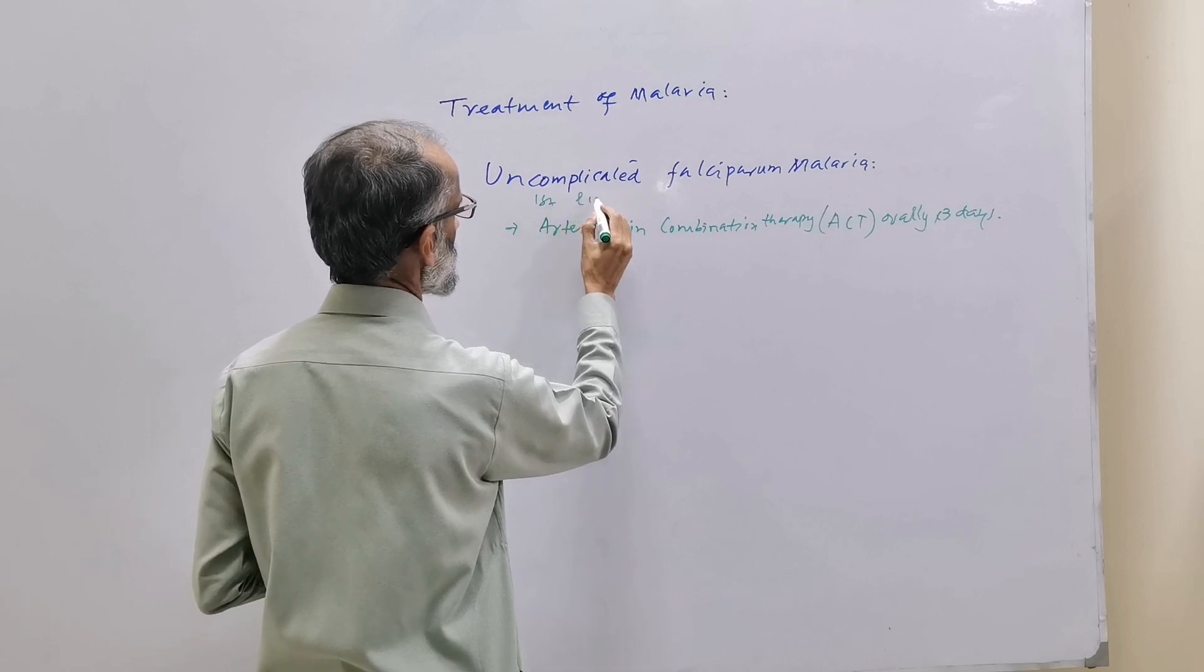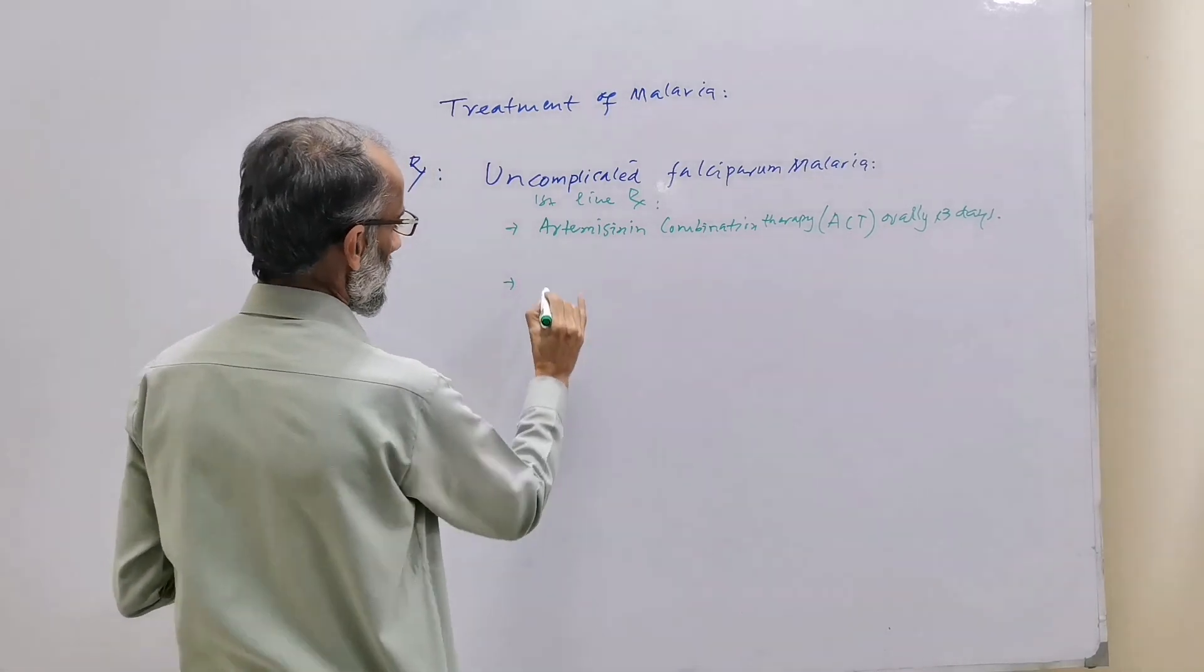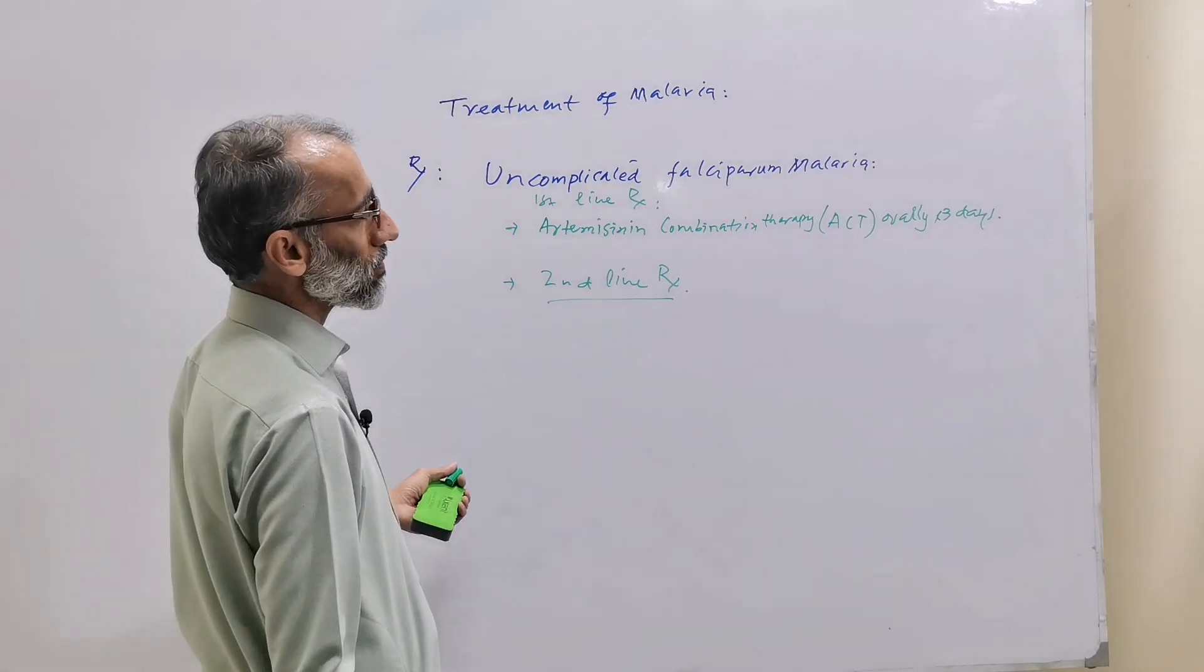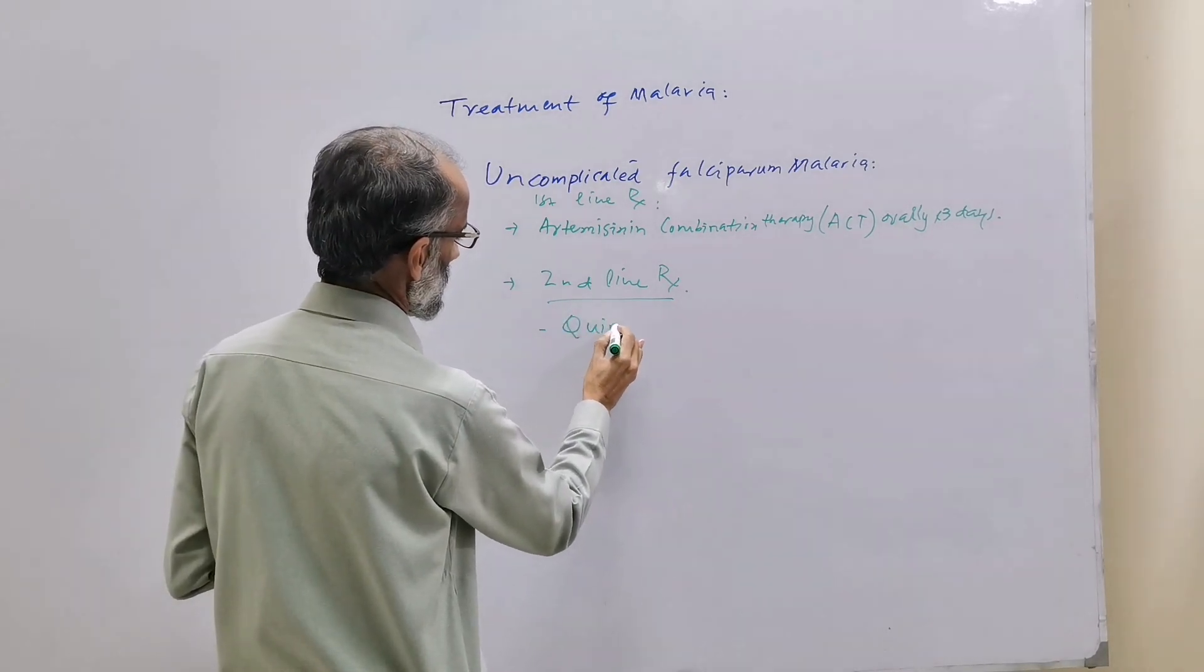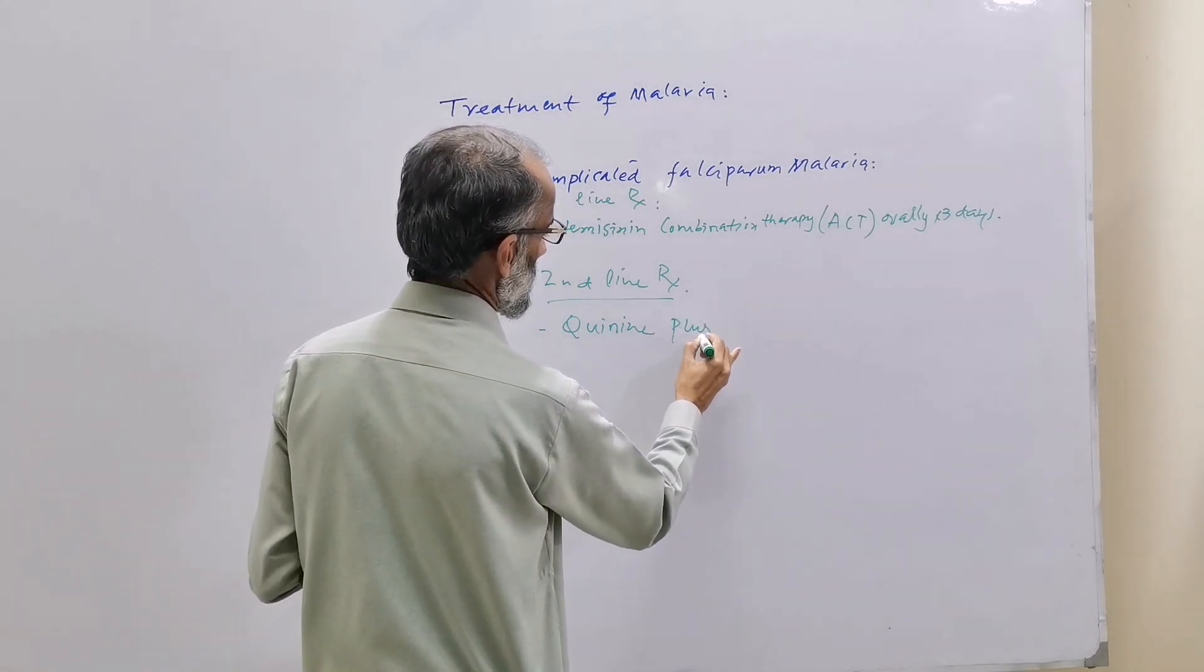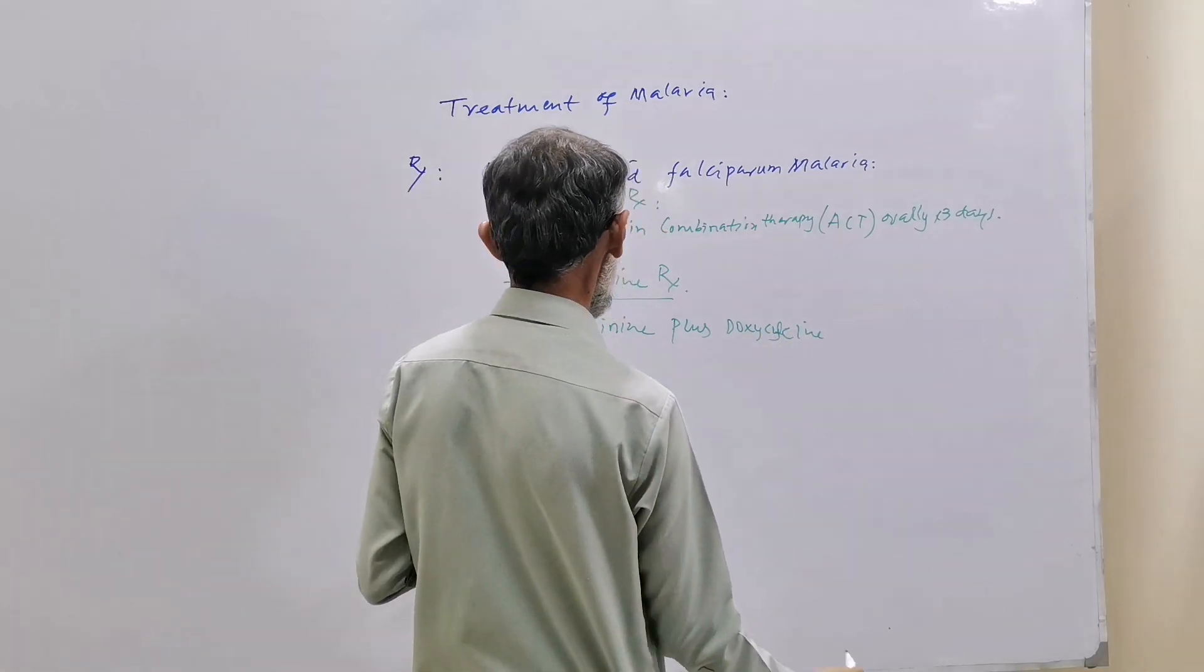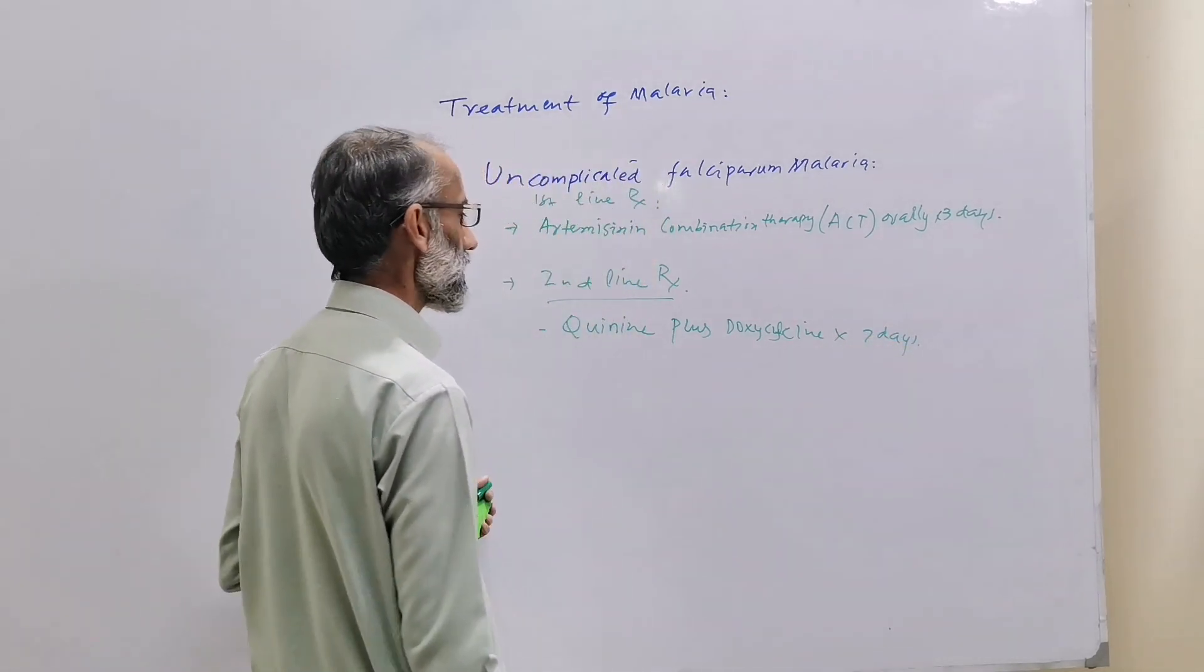The second line treatment for uncomplicated Falciparum Malaria is Quinine plus Doxycycline for seven days.